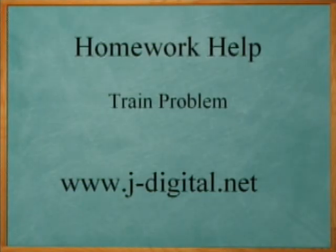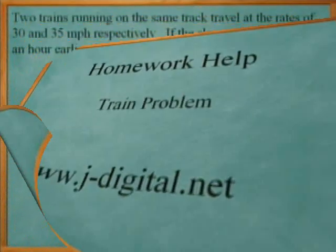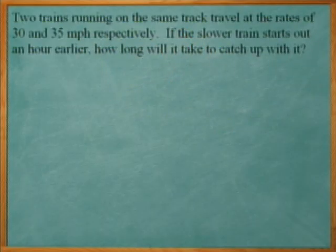This problem is going to deal with two trains traveling at the same time. Let's take a look at it. Two trains running on the same track travel at the rates of 30 and 35 miles per hour respectively. If the slower train starts out an hour earlier, how long would it take to catch up with the other?